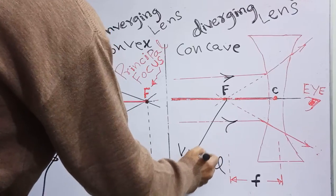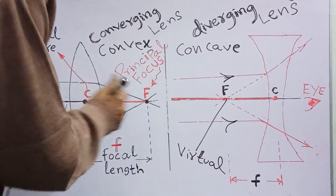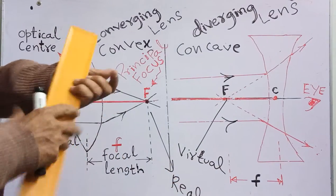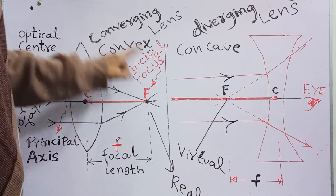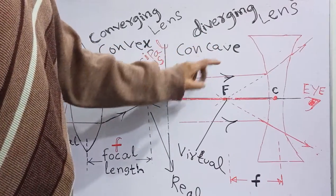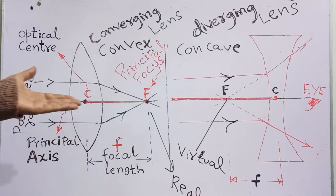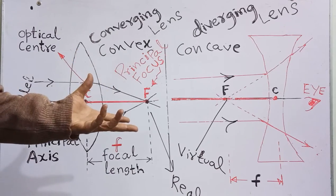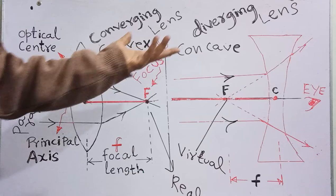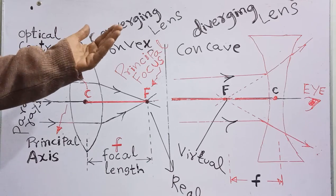The virtual focus means no light ray is actually meeting there — it only appears to meet at that point. In contrast, the principal focus of the convex or converging lens is a real focus, because light rays actually meet there. Hence, the principal focus of the convex or converging lens is real, while the principal focus of the concave or diverging lens is virtual. In the next video, we will discuss the meaning of center of curvature and radius of curvature of the lens, as well as the center of curvature of the mirror. Thanks for watching, and please subscribe to the channel and press the bell icon.